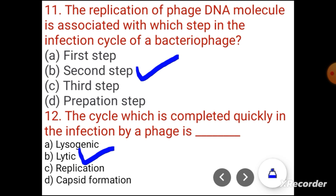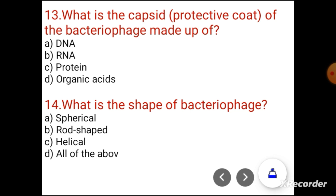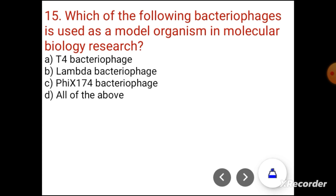Question 13. What is the capsid protective coat of the bacterial phage made up of? Options: DNA, RNA, protein, or organic acid. The correct answer is protein. Question 14. What is the shape of bacterial phage? Options: spherical, rod shape, helical, or all of the above. The correct answer is all of the above. Question 15. Which of the following bacterial phage is used as a model organism in molecular biology research? Options: T4 bacterial phage, lambda bacterial phage, ΦX174 bacterial phage, or all of the above. The correct answer is all of the above.